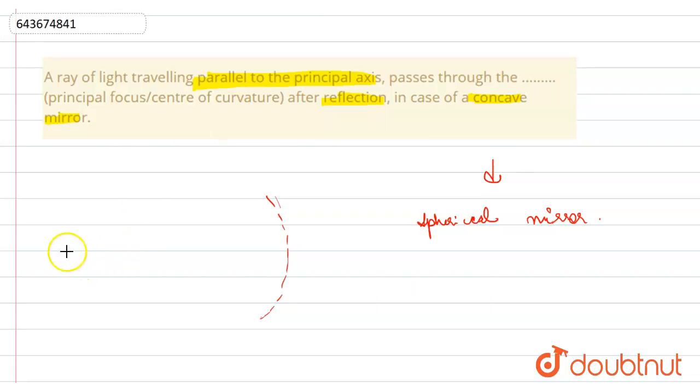And if any ray is traveling parallel to the principal axis, what will happen after reflection? If this is a concave mirror, after reflection what will happen?